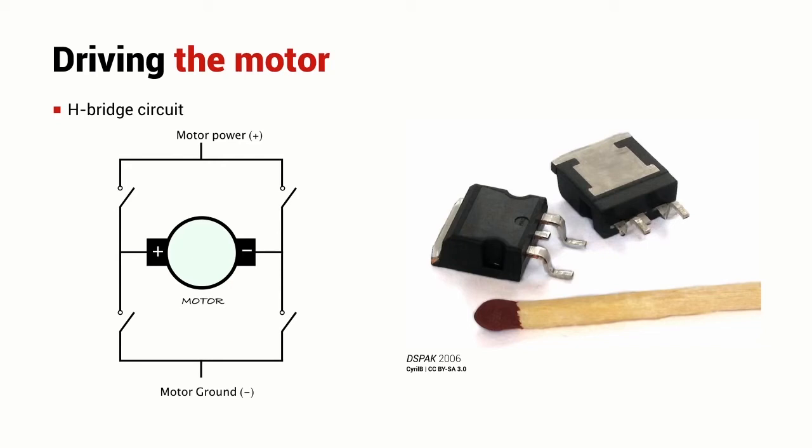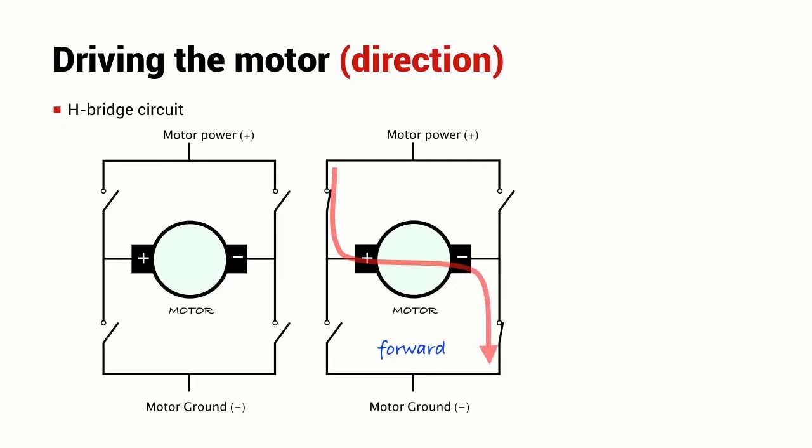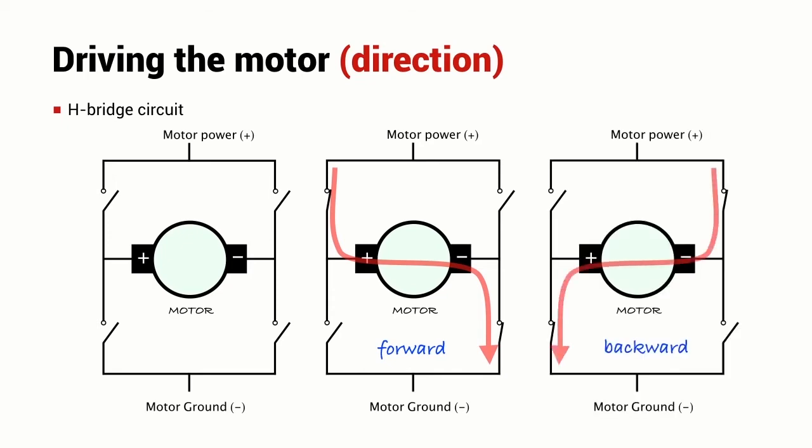As shown here, no current can flow through the motor but if I close two of the switches then we see the current will flow through the motor in one particular direction and the motor will rotate in the forward direction. If I open those two switches and close the other two, current flows in the other direction through the motor and the motor rotates backwards.